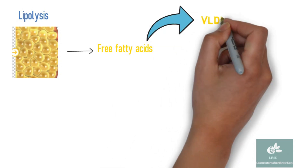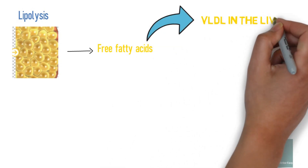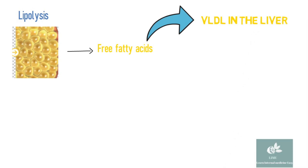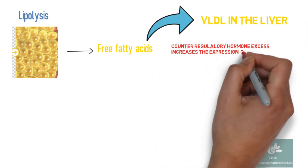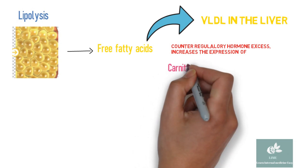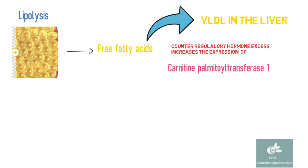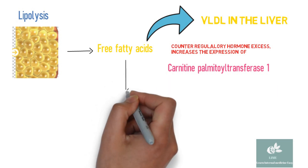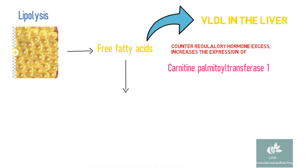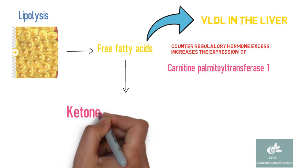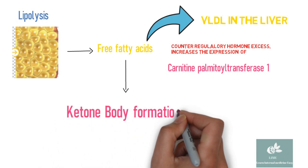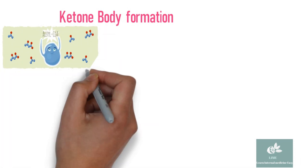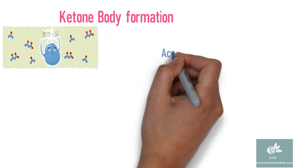Increased lipolysis leads to increased release of free fatty acids in the blood. Normally these free fatty acids are converted into very low density lipoprotein in the liver. However, in DKA, counter-regulatory hormone excess increases the expression of carnitine palmitoyltransferase 1 in mitochondria. This enzyme is crucial in regulating fatty acid transport into mitochondria where beta oxidation and conversion to ketone bodies occurs, resulting in increased ketone body formation.